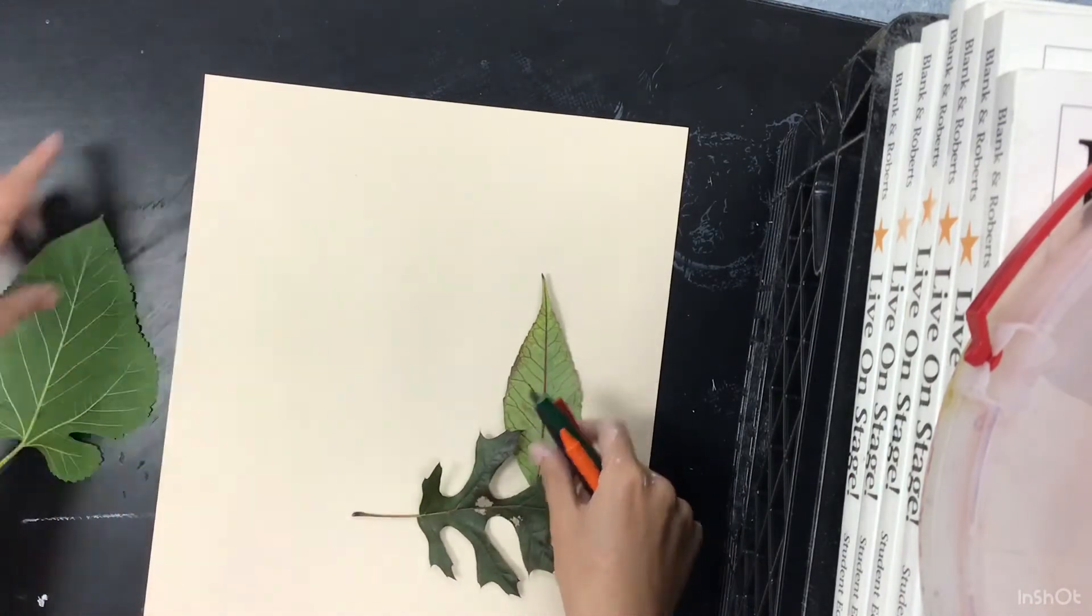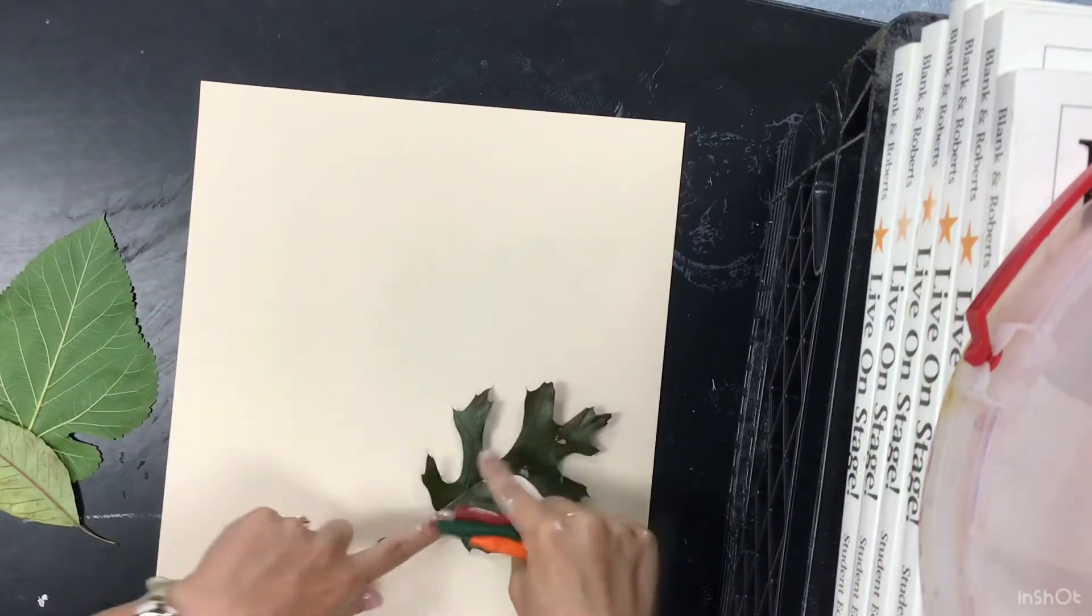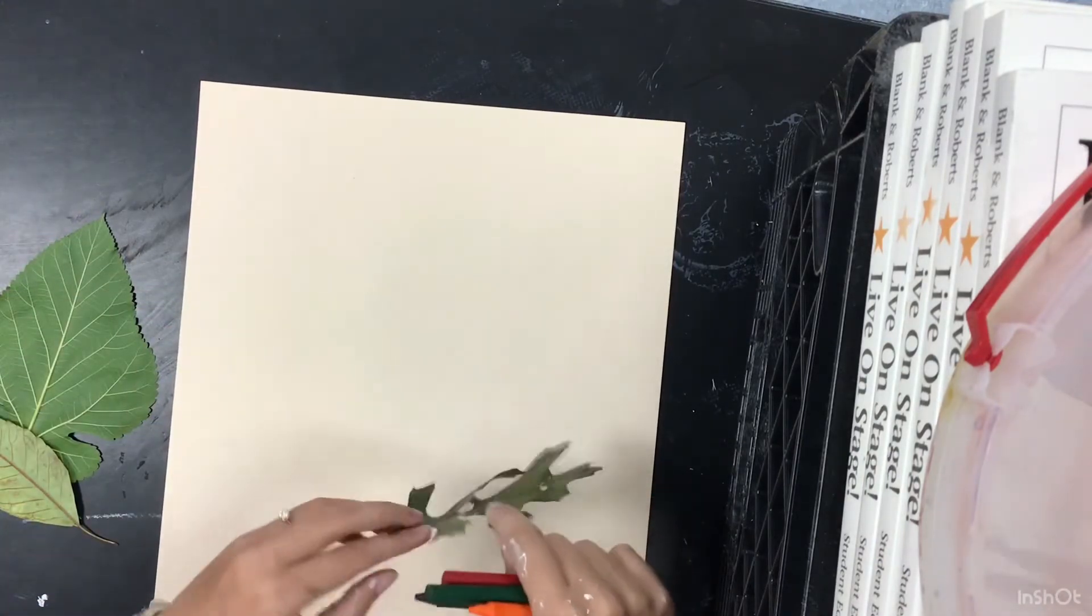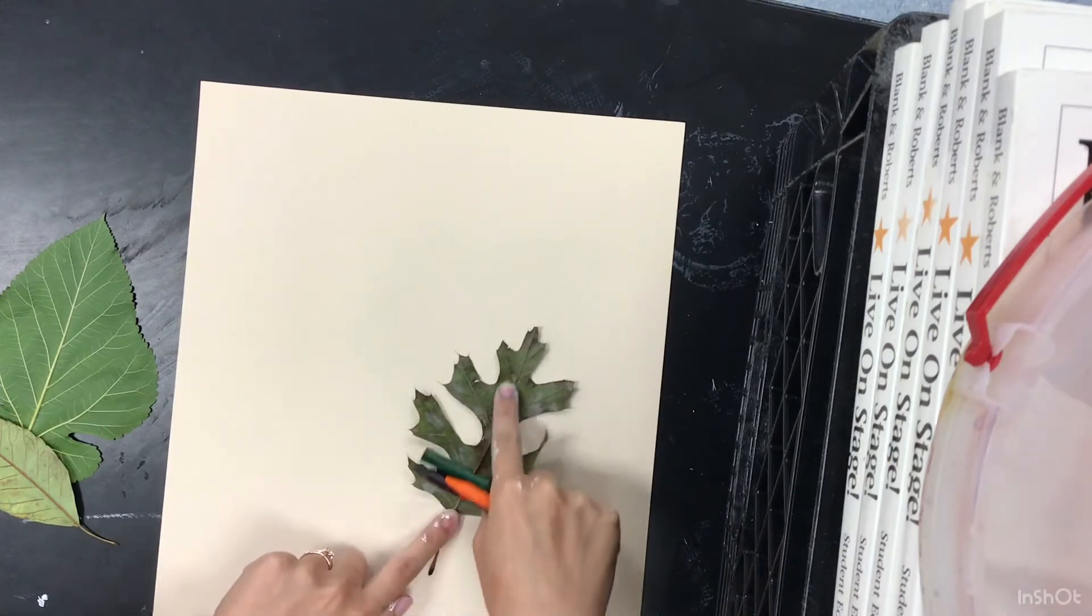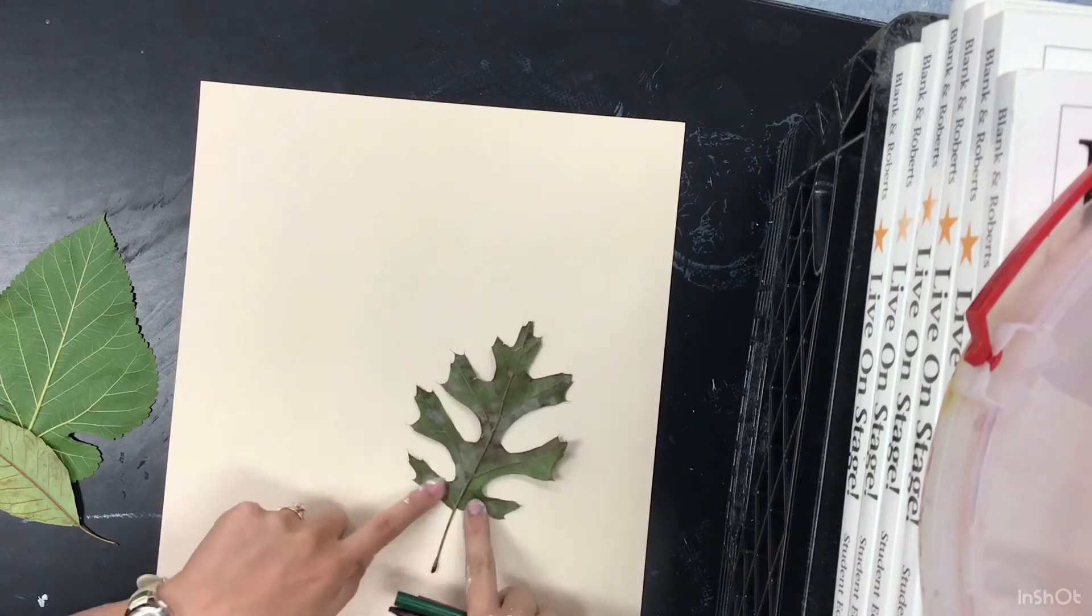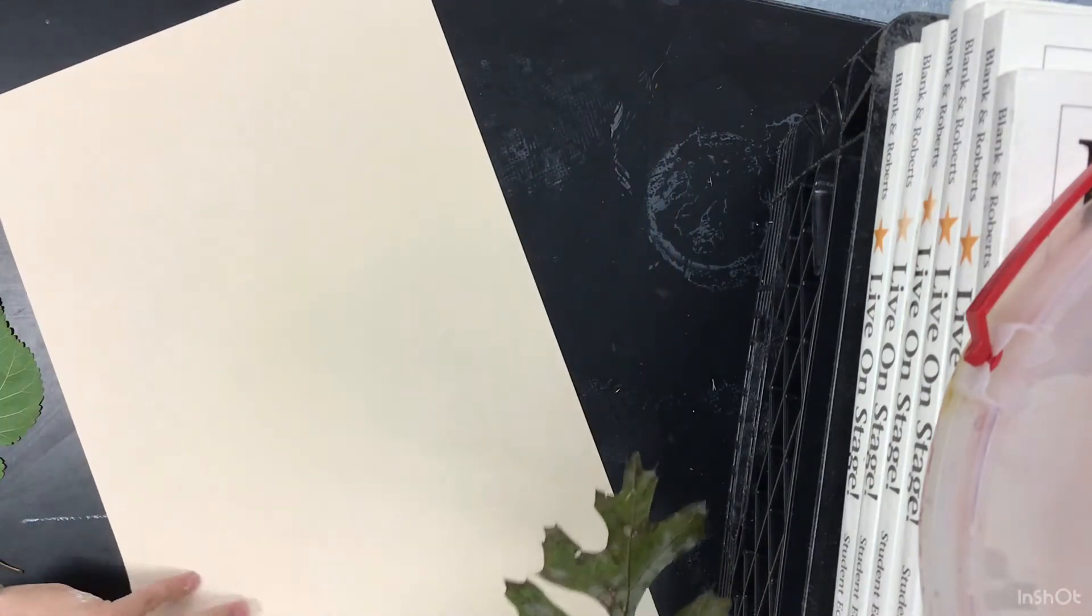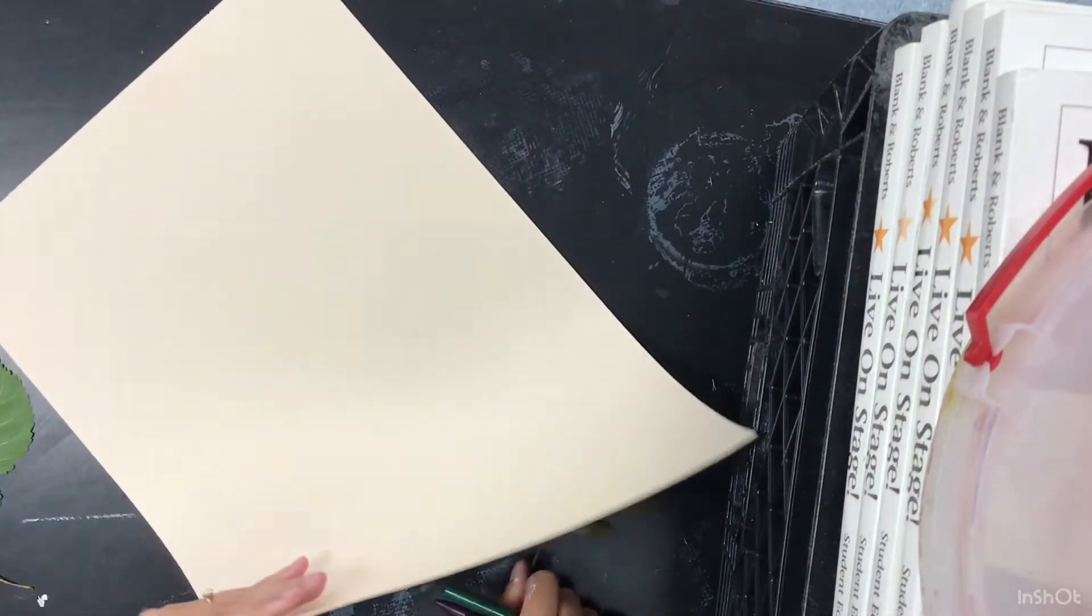The very first thing I'm going to do is choose the leaf that I want to start with. I think I'm going to start with this one. I'm going to flip it over so that I see all these veins and all this texture is facing upward. Then I'm going to stick them underneath my paper.